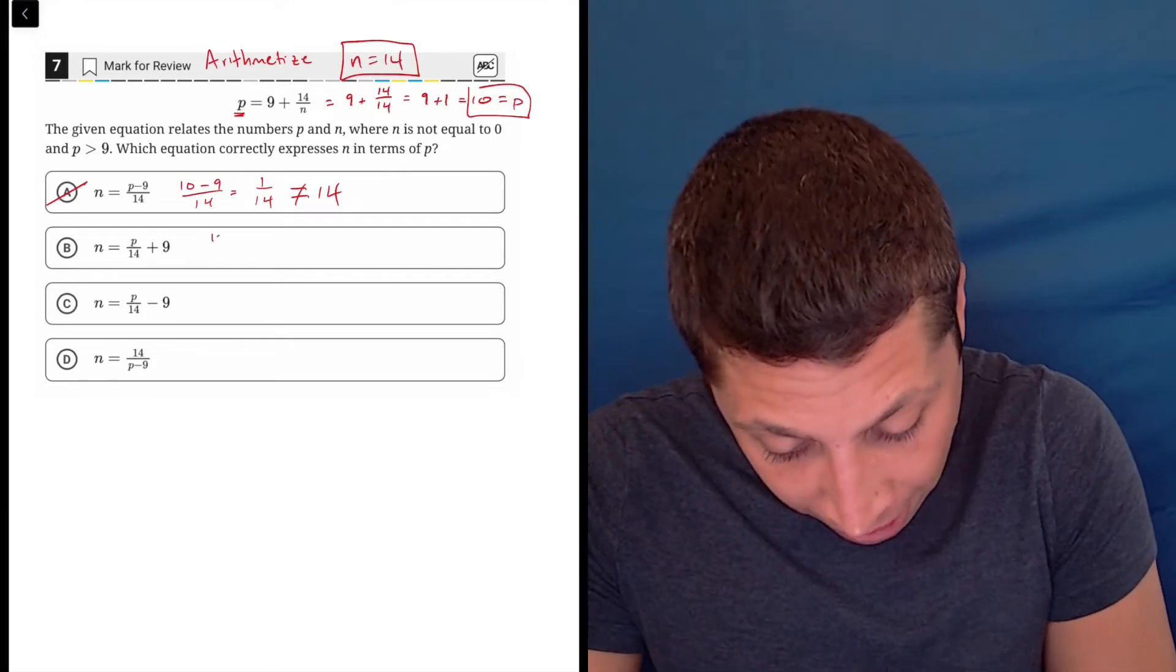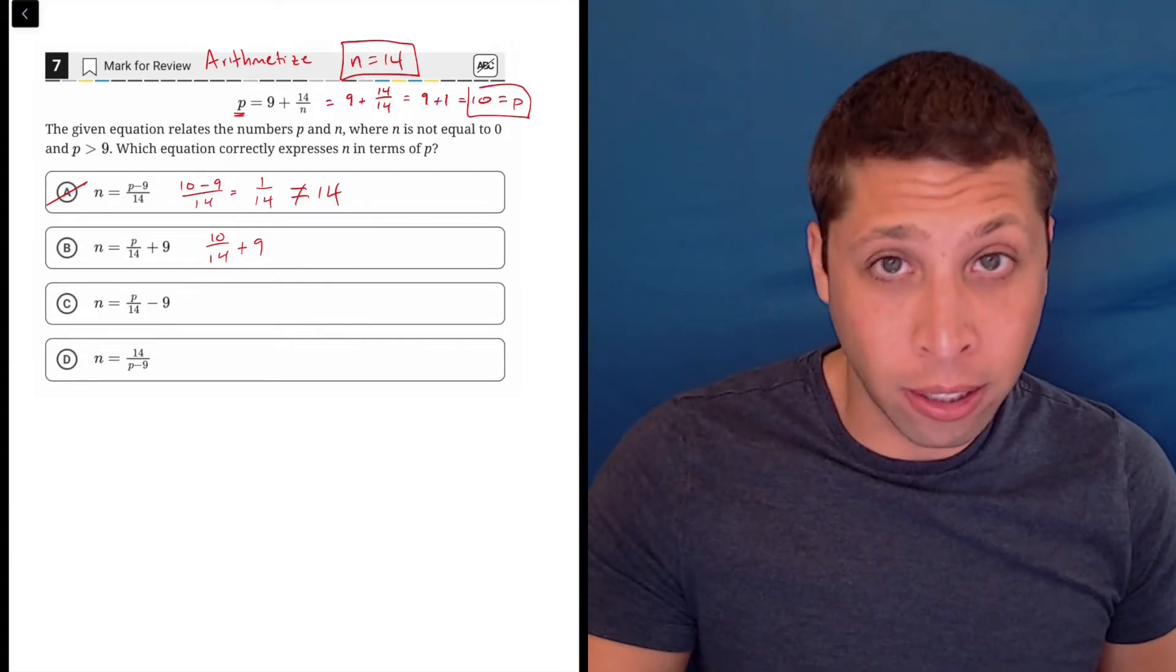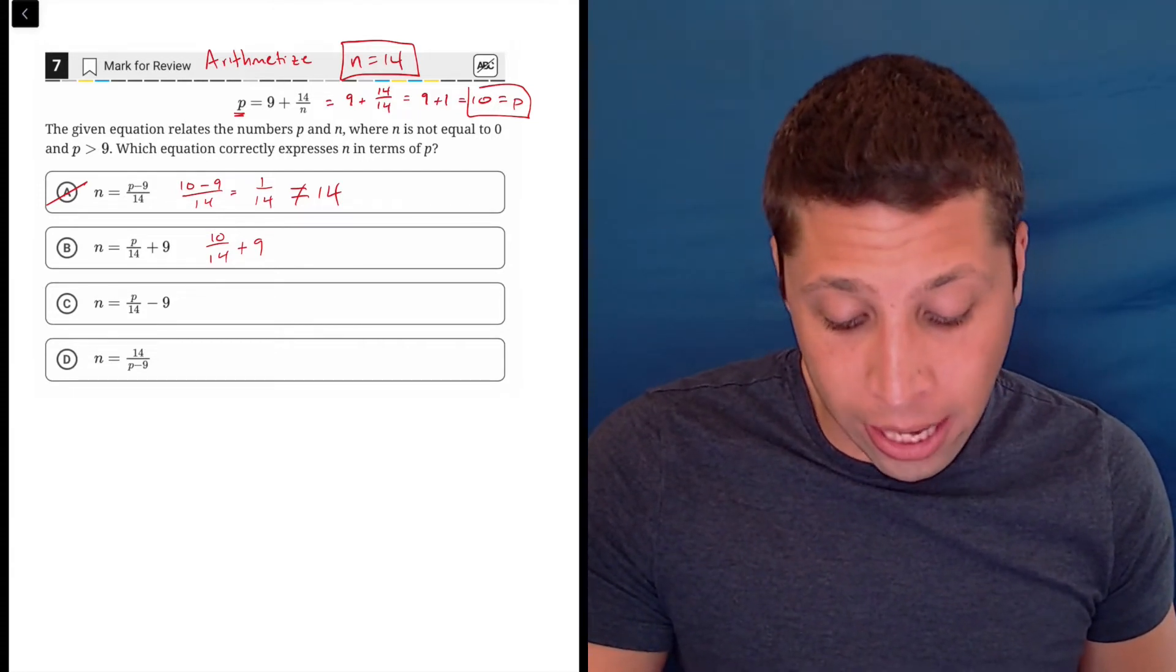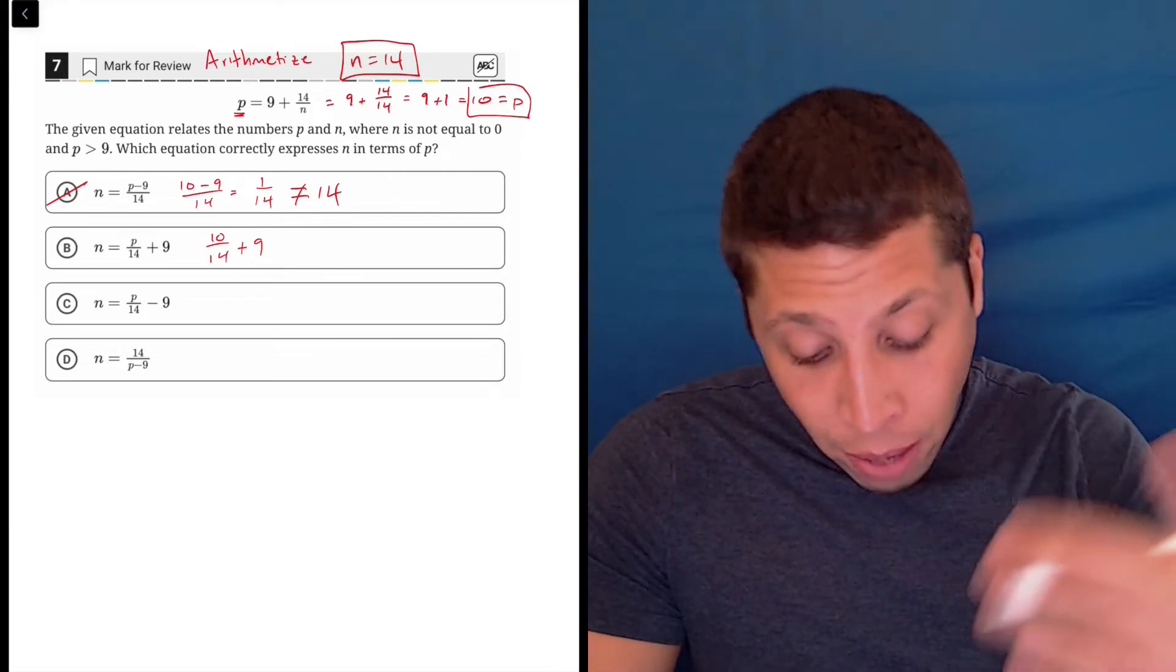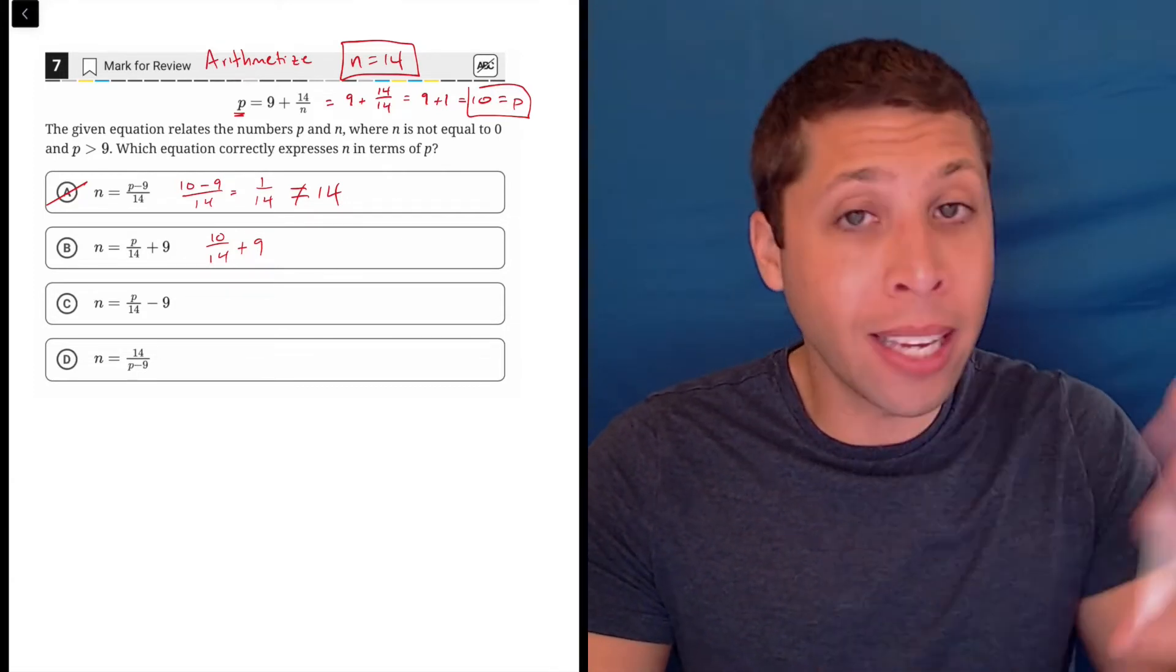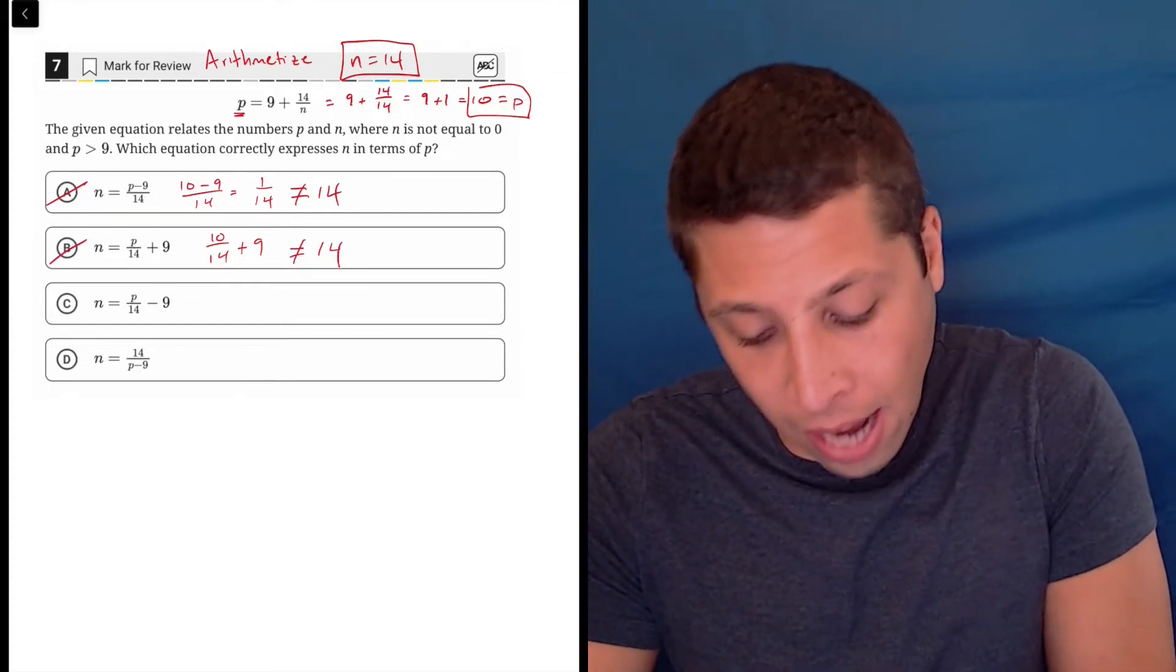Choice B would be 10 over 14 plus 9. Now, I have my calculator so I could figure this out, but just looking at it, I know that 10 over 14 is not a nice number. And so, if I add whatever decimal that is to 9, I'm going to get another decimal. But what I want to get is 14, and that's not going to happen.